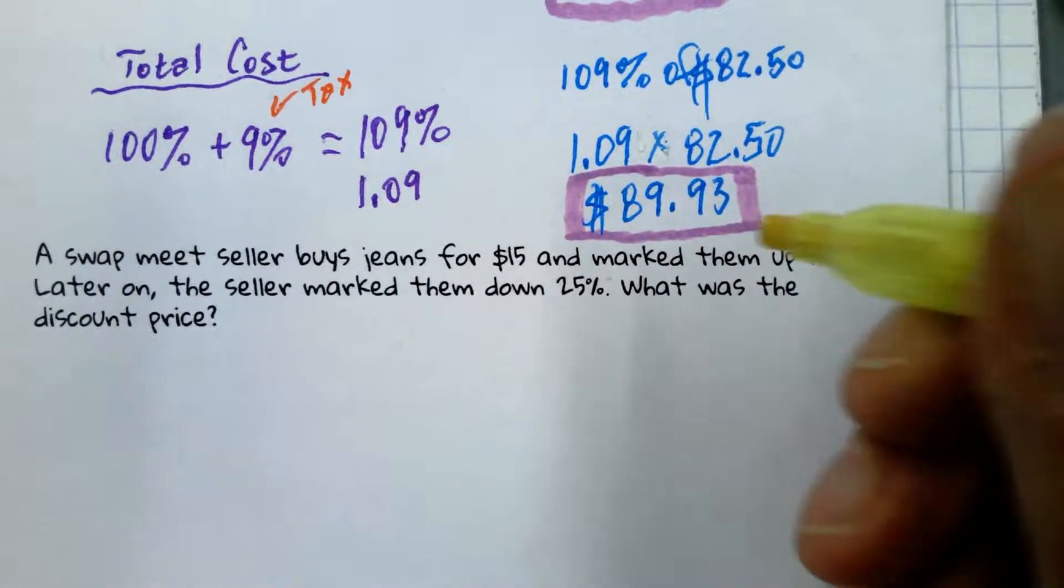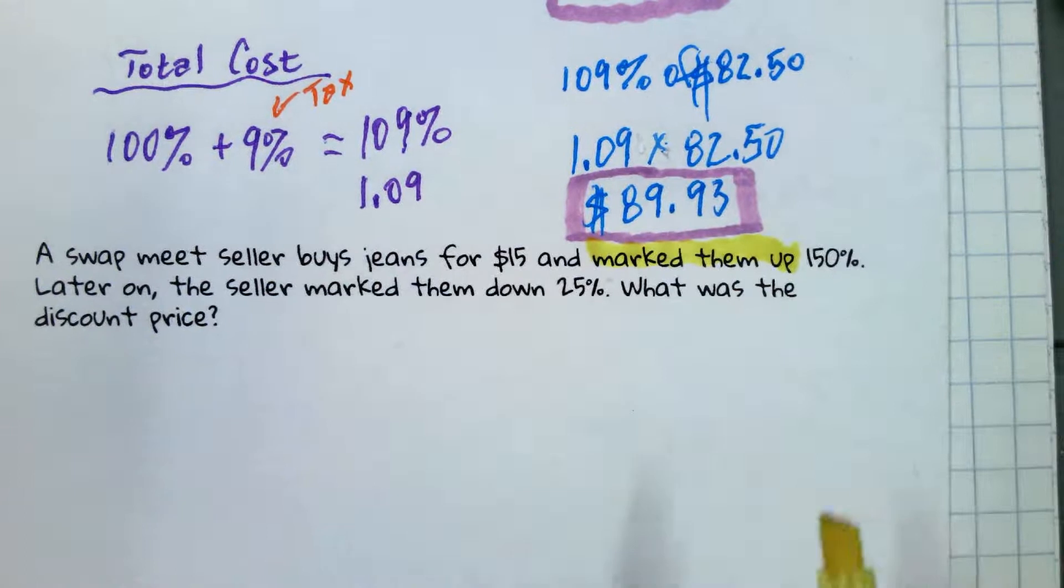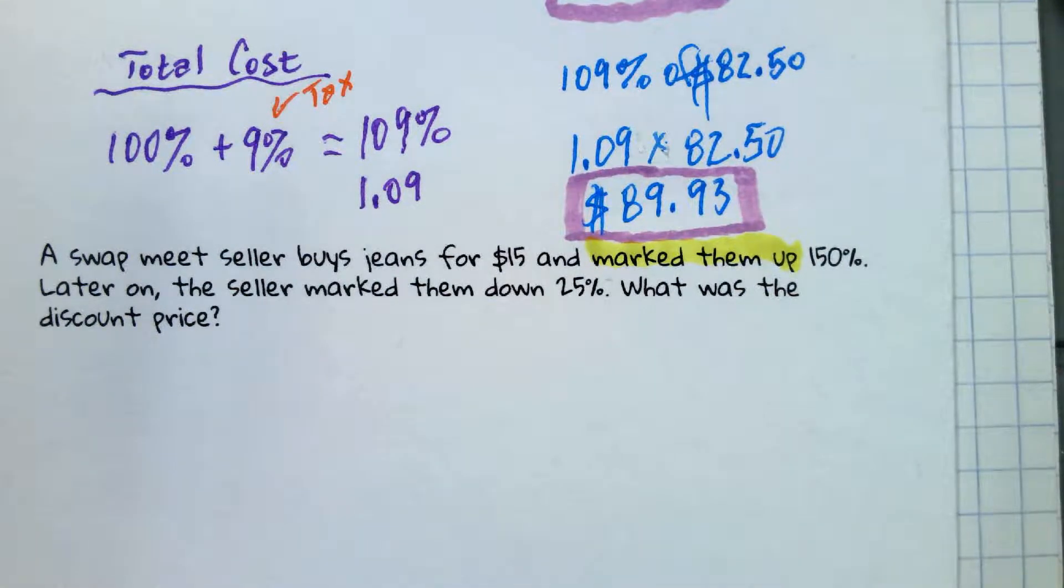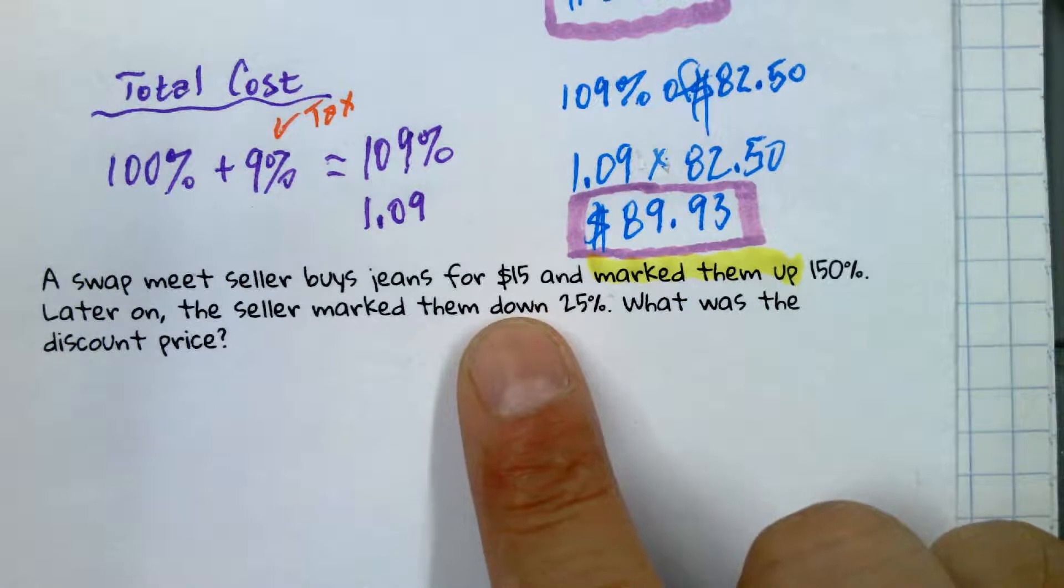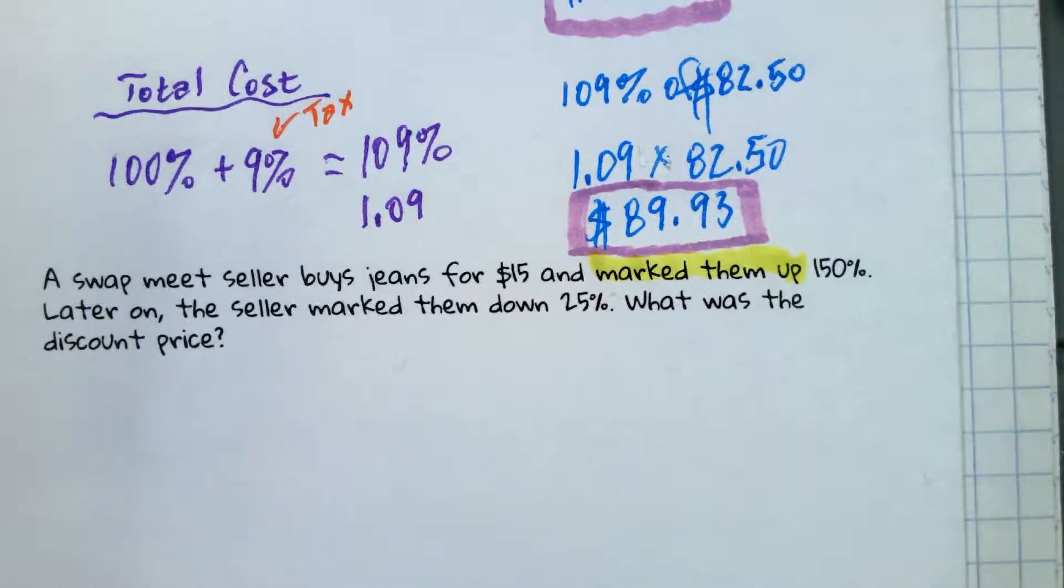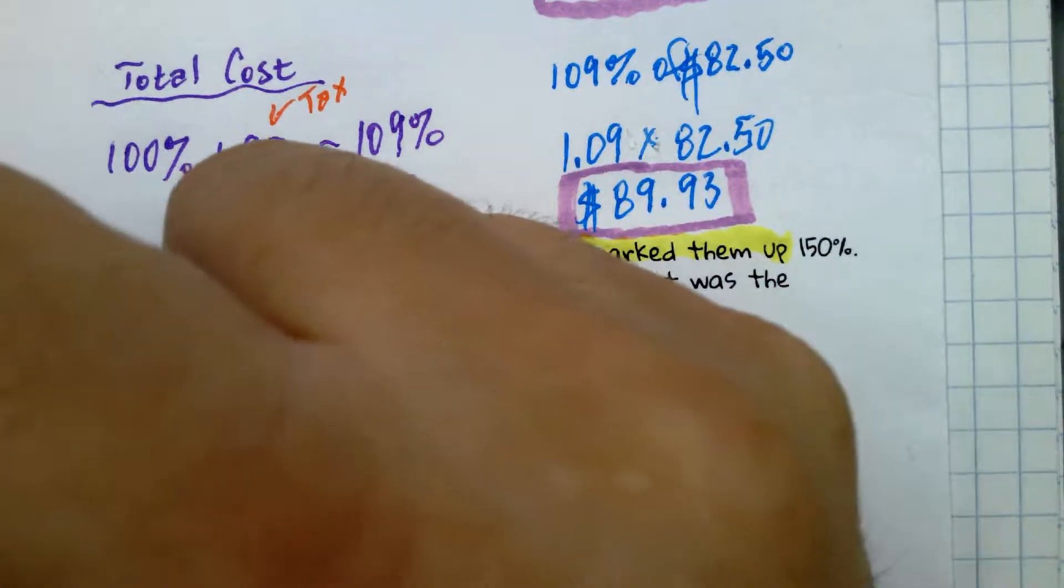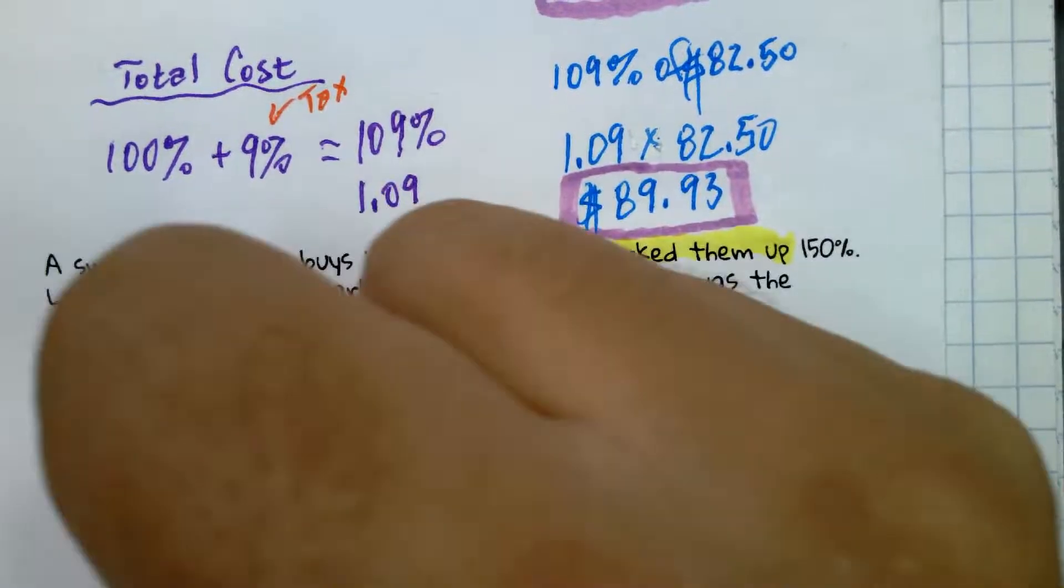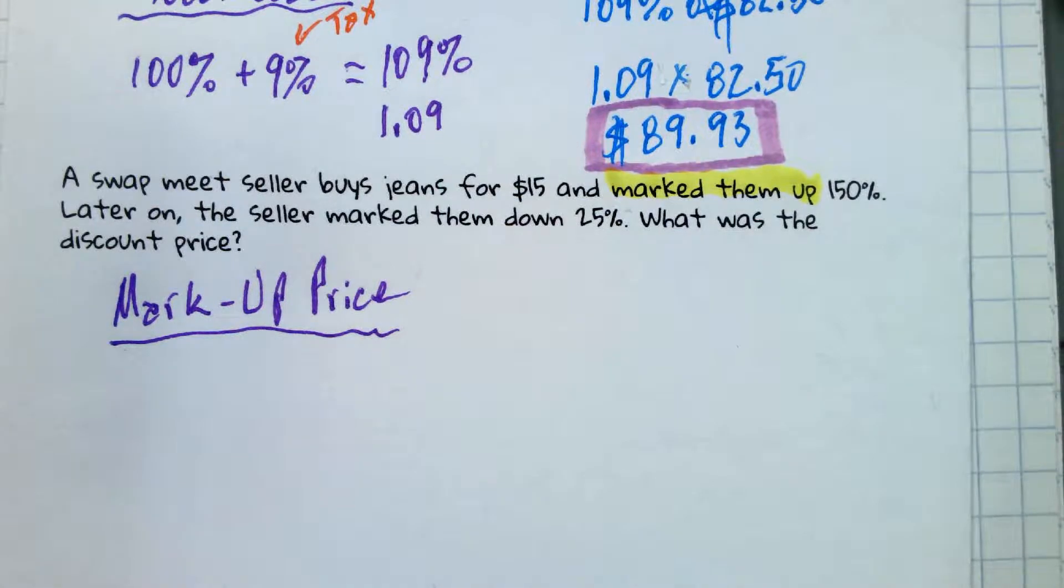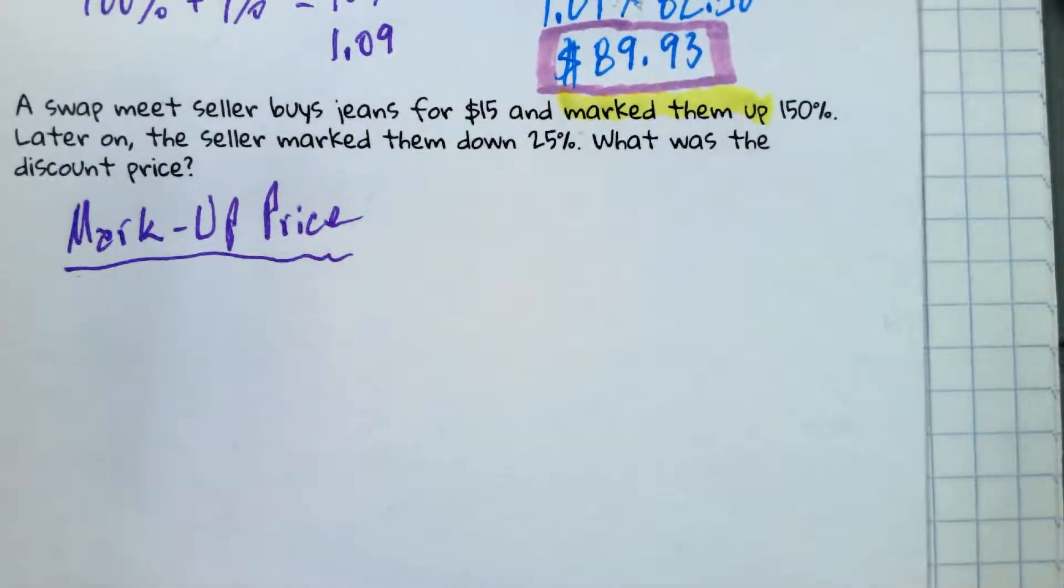That's a good one. So does everyone understand the context here? Especially this word markup. Anyone who sells something, yeah, they have to make profit. And so you mark things up. You buy them for a nickel, you sell them for a dime, they generally say. That's what the markup is. So in this case, are we adding to the 100%, which is the $15, or are we removing? Adding. So the first thing we're going to do is get the markup price.